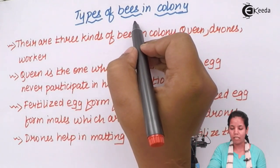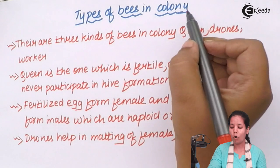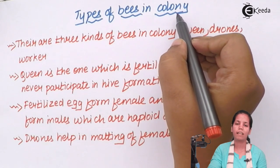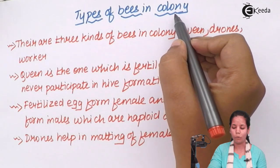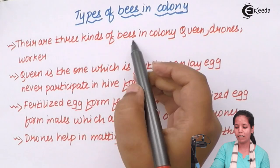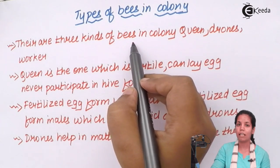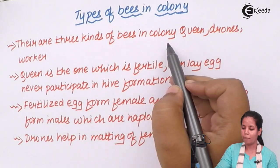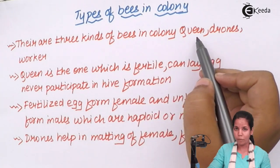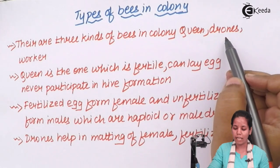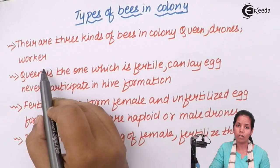Types of bees in the colony, or simply the honeycomb. There are three kinds of bees in the honeycomb or hive: the queen bee, drones, and the worker bee.